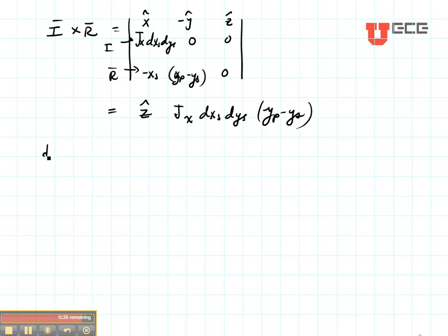Now let's apply the Biot-Savart Law. I cross R divided by 4 pi R cubed. Just plug everything in here and it's going to be ready to integrate.